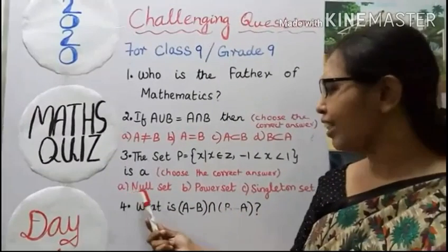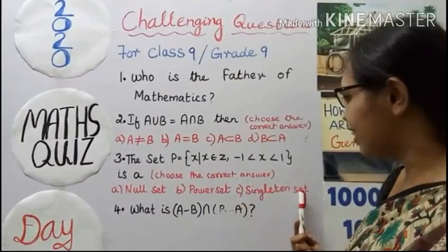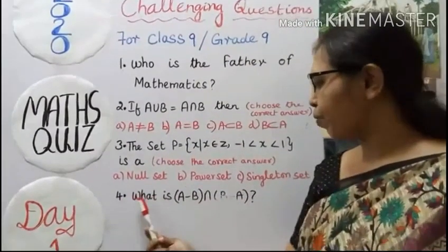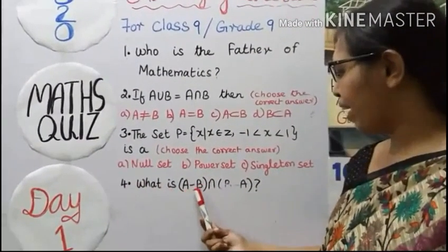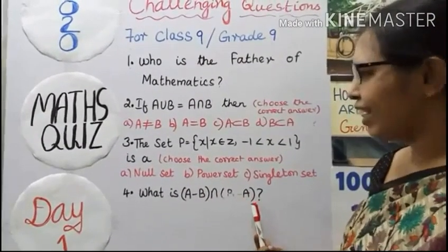Option A: Null set. Option B: Power set. Option C: Singleton set. Fourth question. What is A minus B intersection B minus A?